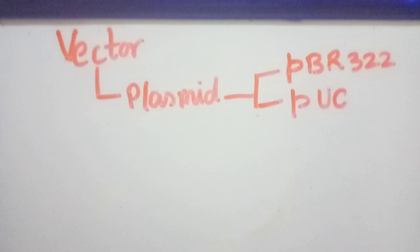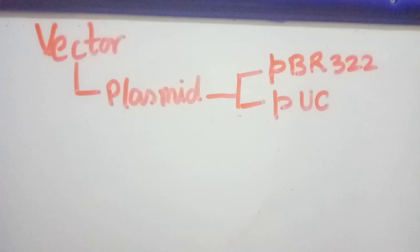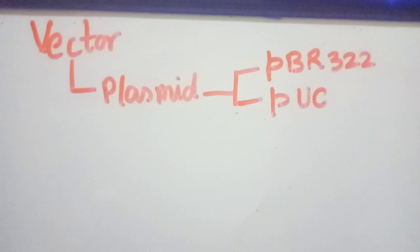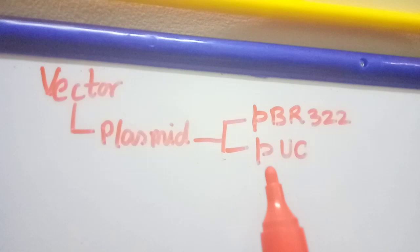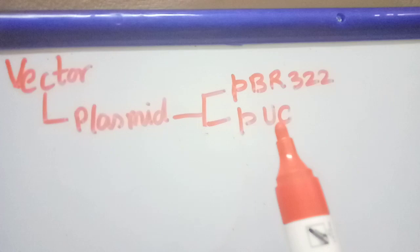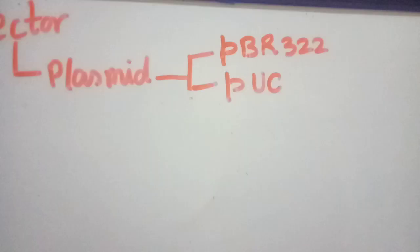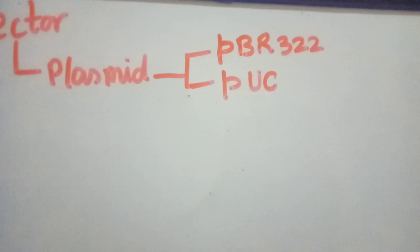Coming to the vector, first one is the plasmid pBR322. There are various types of plasmids - pBR, where p stands for plasmid, BR for Bolivar, 322 is a number. Likewise, pUC: p for plasmid, UC for University of California, since it has been developed at the University of California.